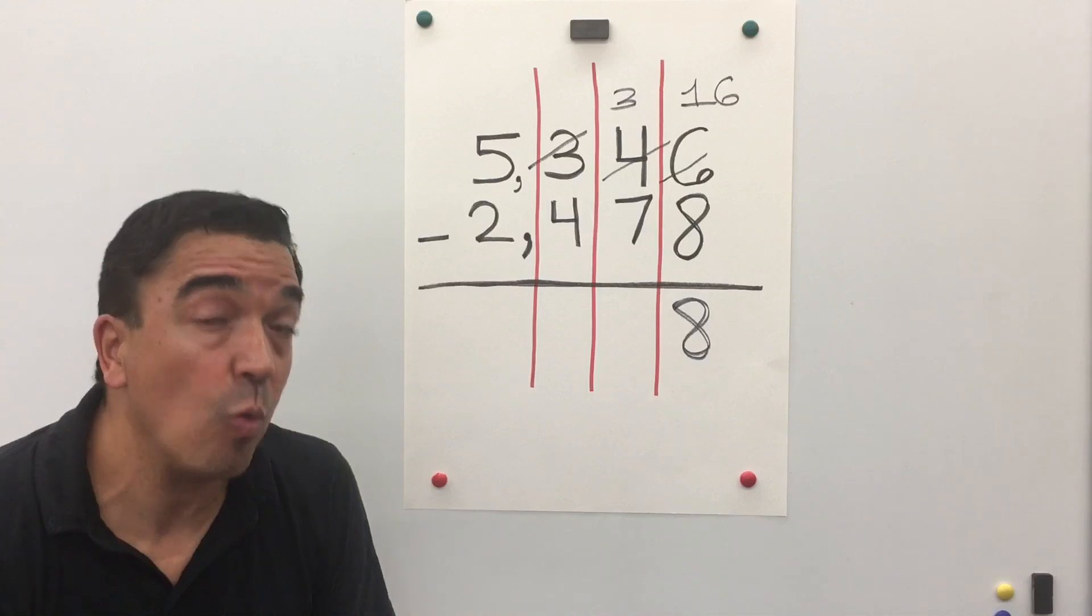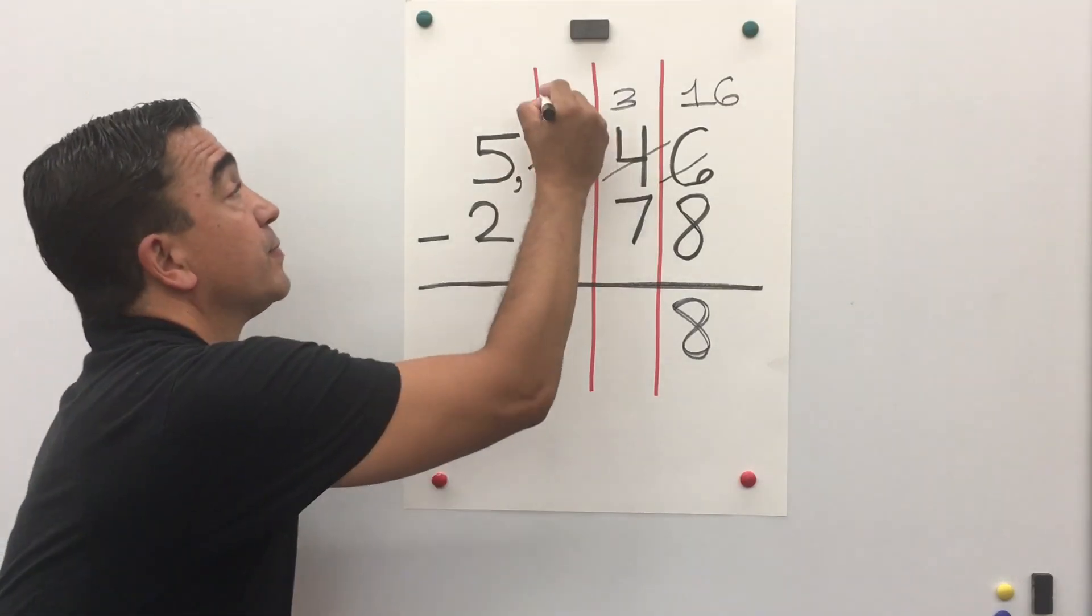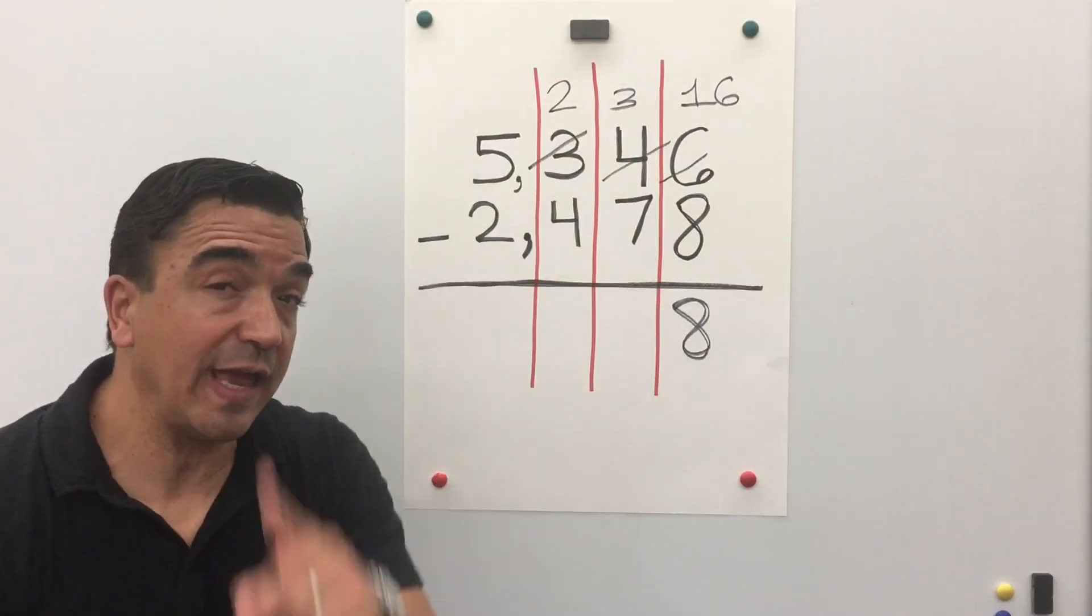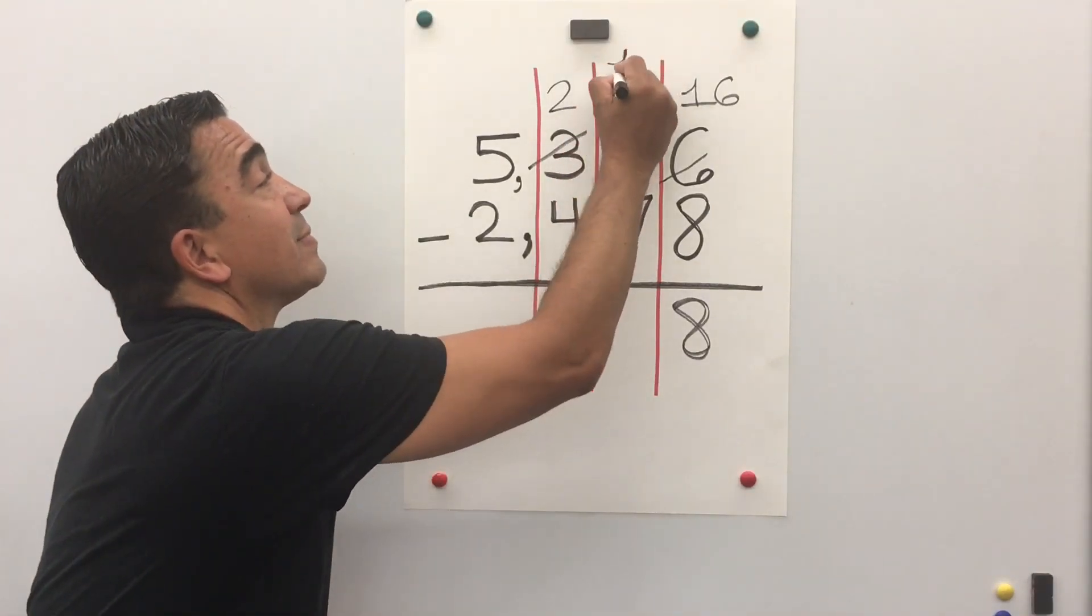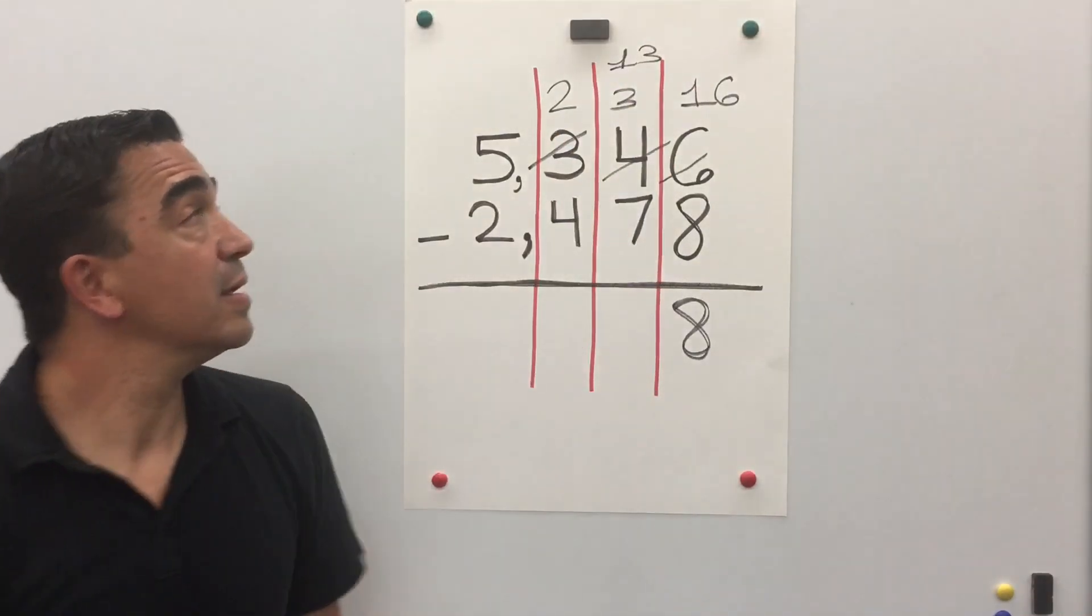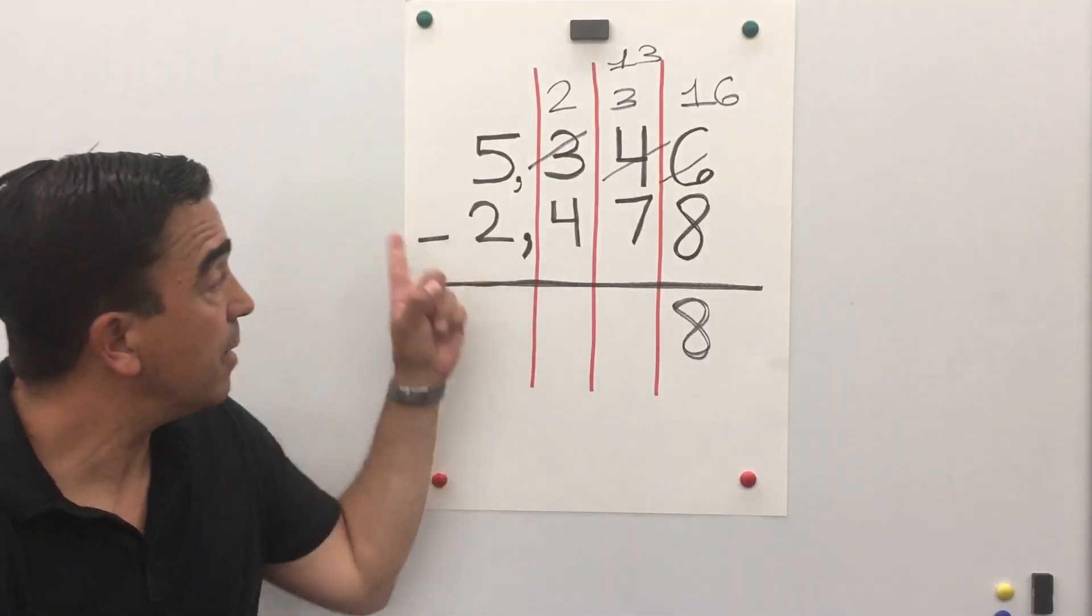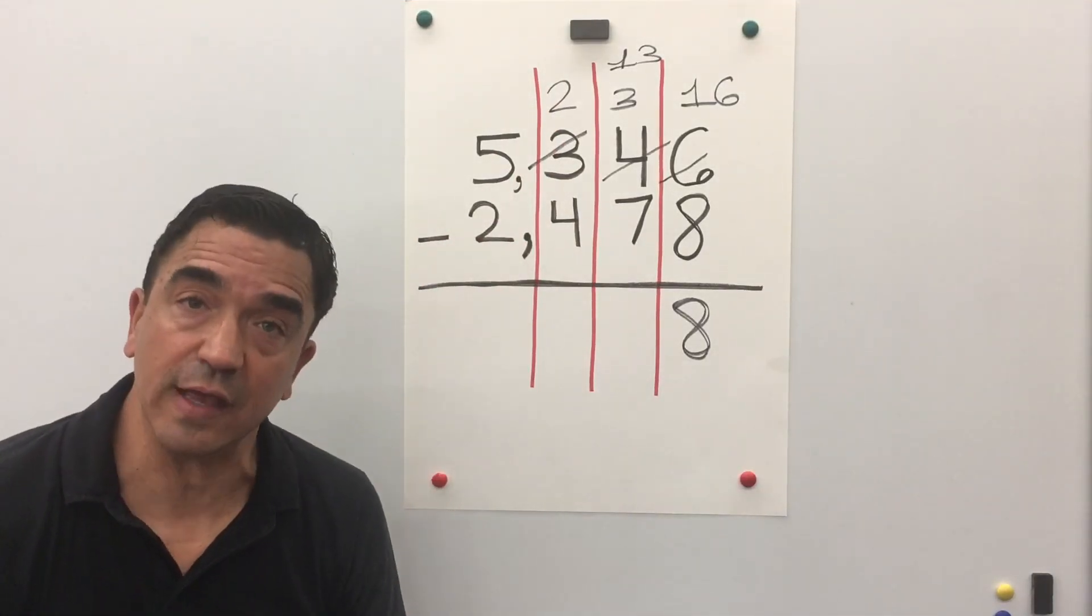That means now we have two left. And we're gonna take our one hundred and add it to three tens. 13 minus 7 is 6.